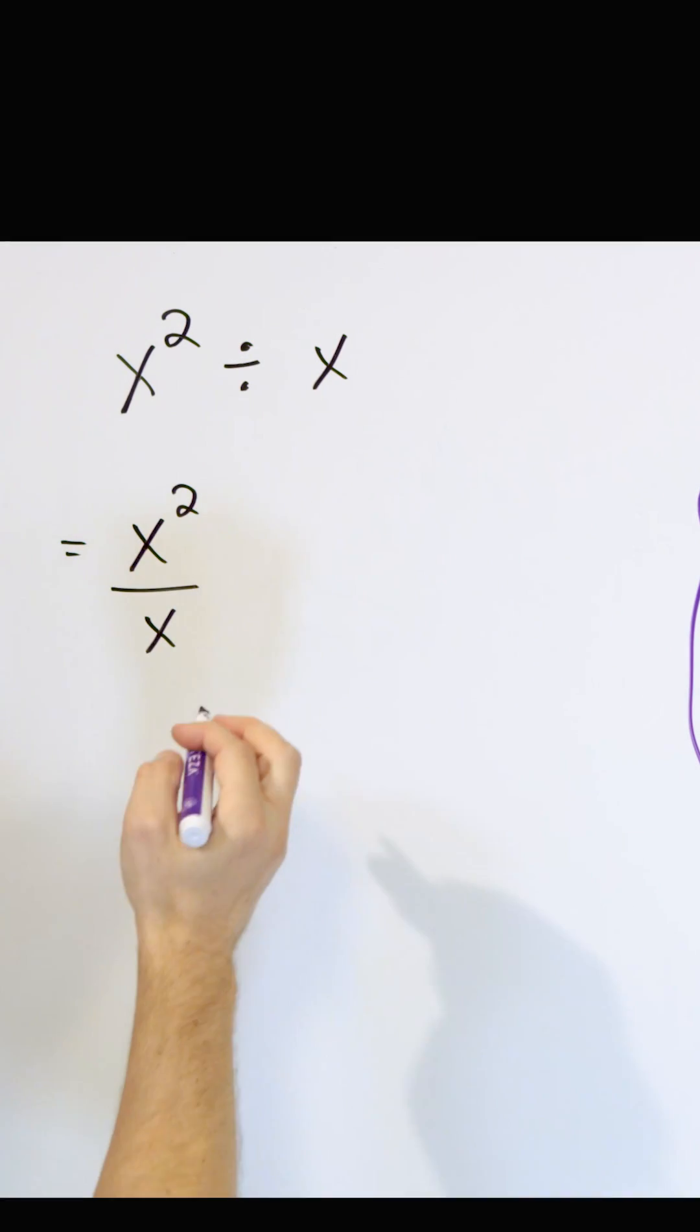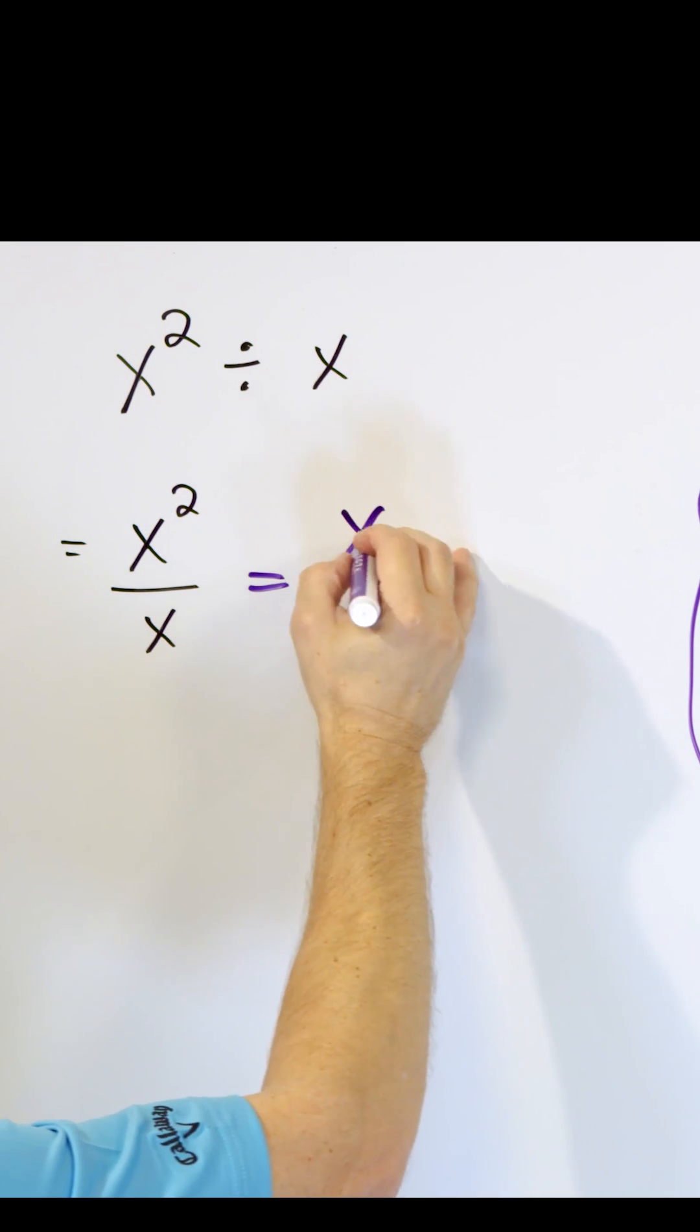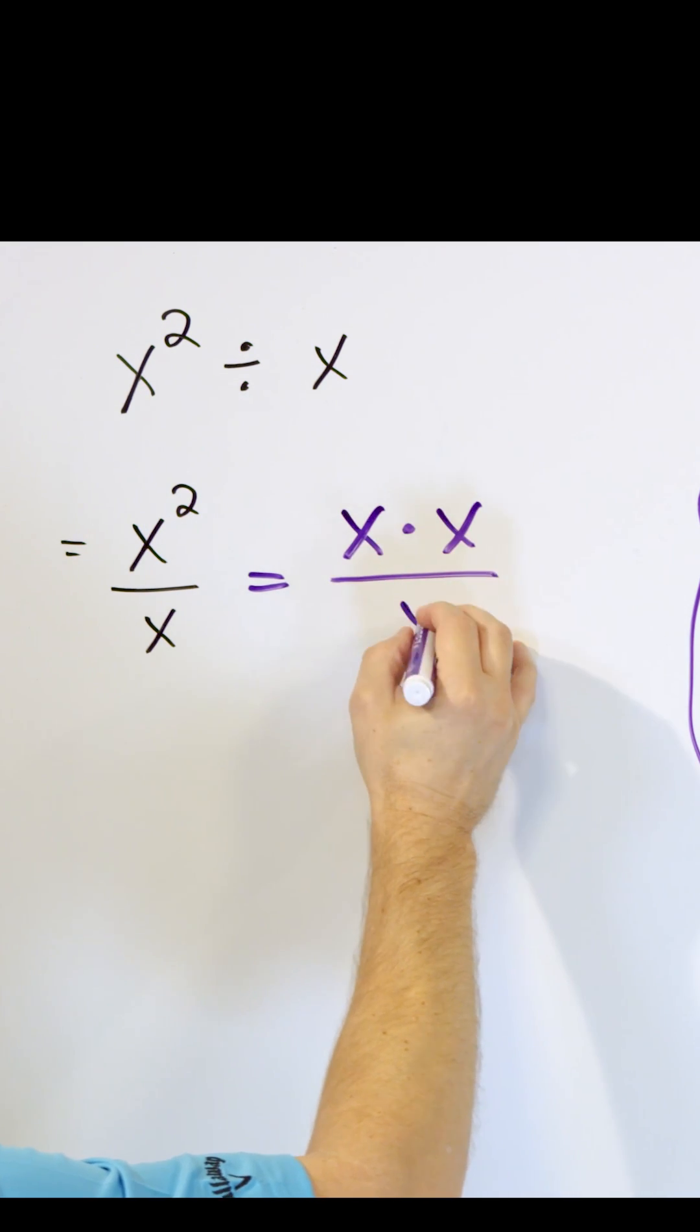Our problem looks scarier, but it's not because when you think about it, on the top, what do you have? x squared is x times x. And on the bottom, you just have x.